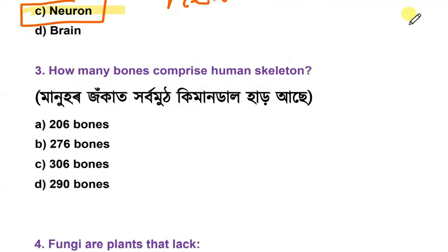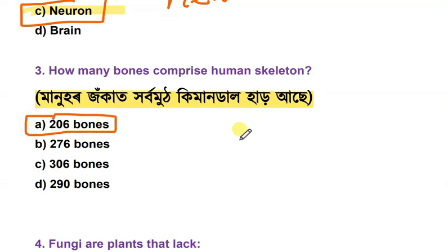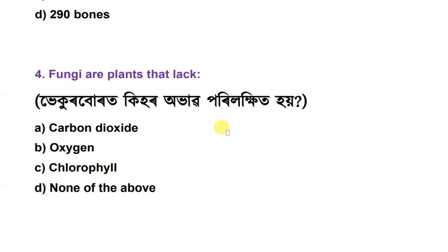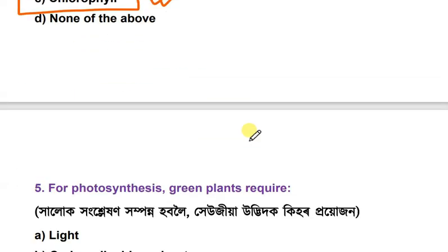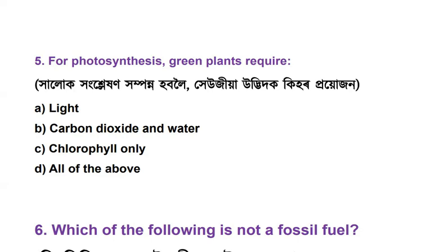How many bones comprise the human skeleton? The options are 206, 276, 306, and 290. The correct answer is 206 bones.